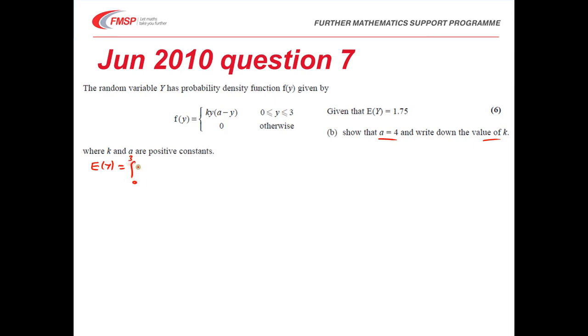It's going to equal y times the function of y. Tidying up and sorting gives me the integral from 0 to 3 of ay squared minus y cubed. The k can come out for a second.